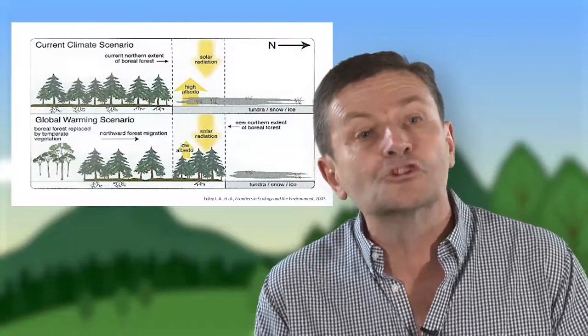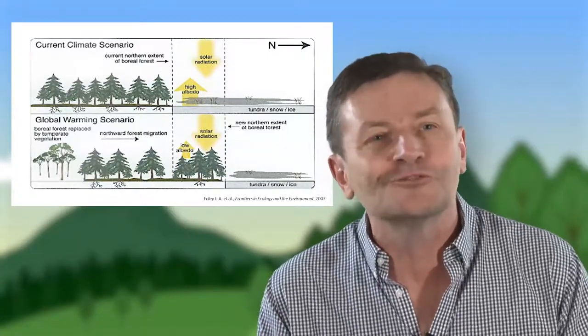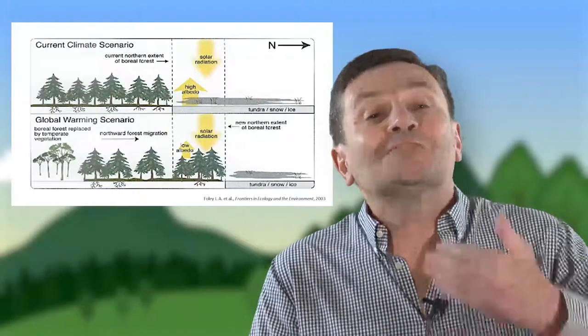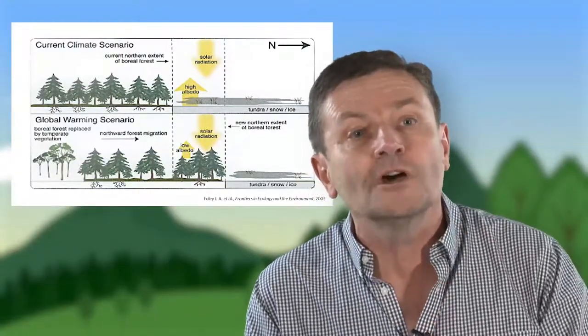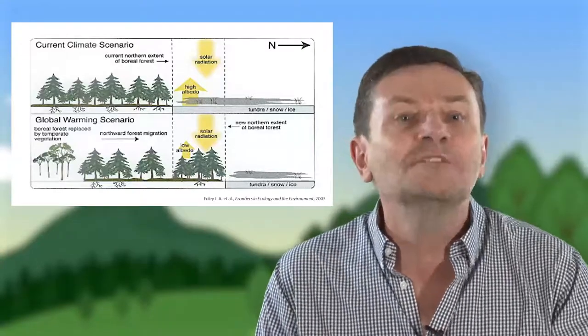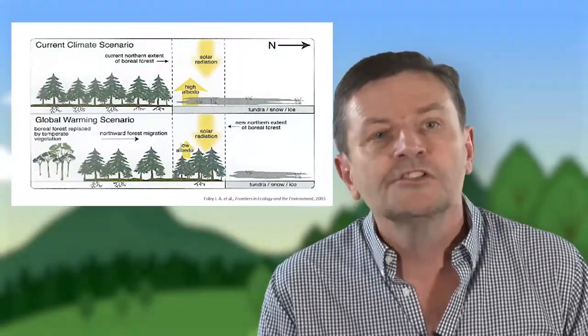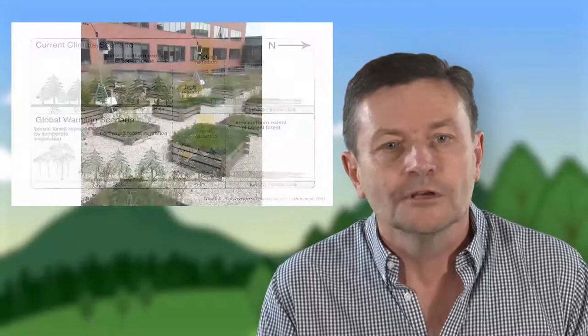Et donc là, on voit bien que le changement de végétation, qui est une réponse naturelle au changement climatique, à son tour, change le climat. Et donc vous voyez bien que si on veut faire des prédictions correctes sur le climat du futur, eh bien il va falloir prendre en compte la dynamique du vivant, qui joue un rôle actif dans le climat futur.